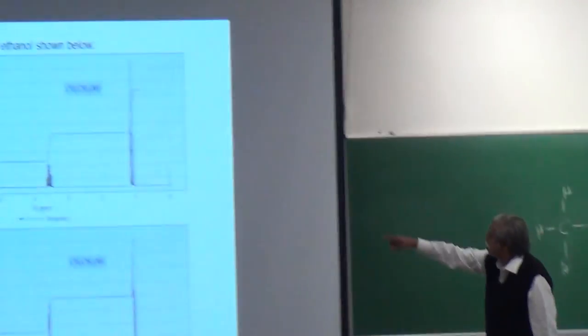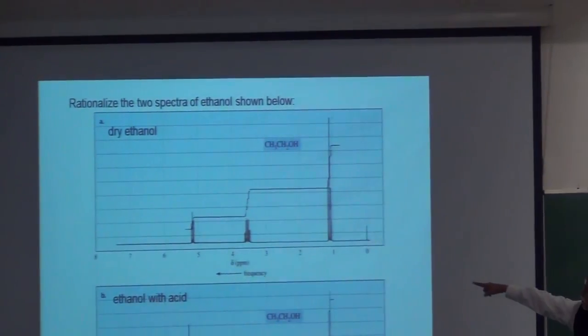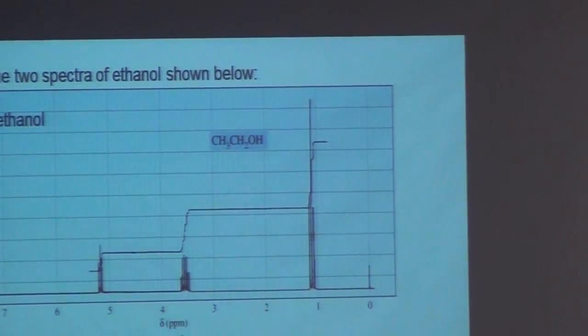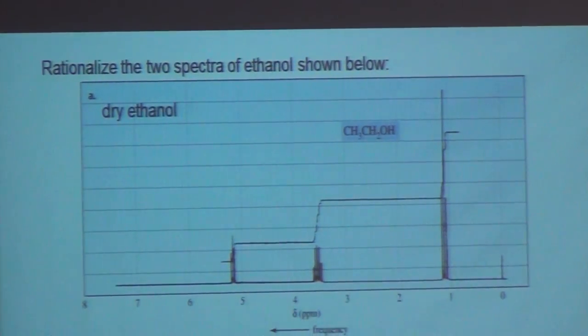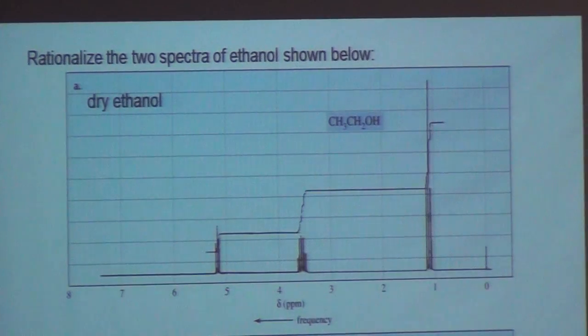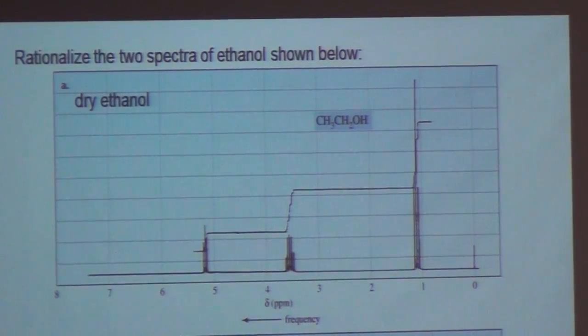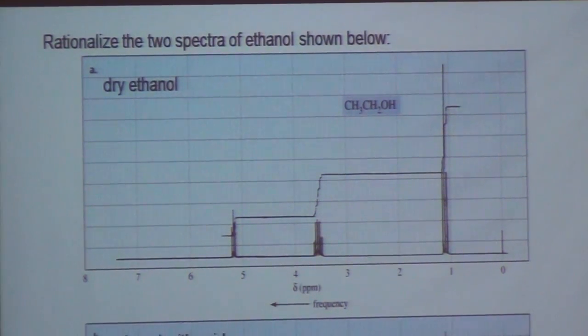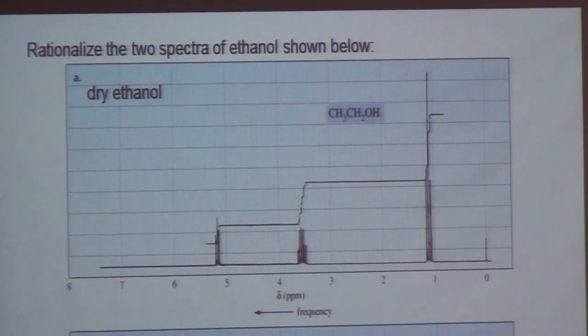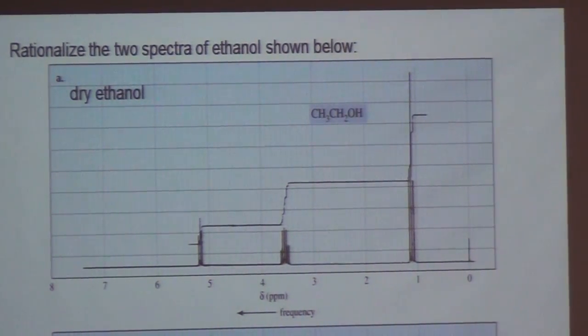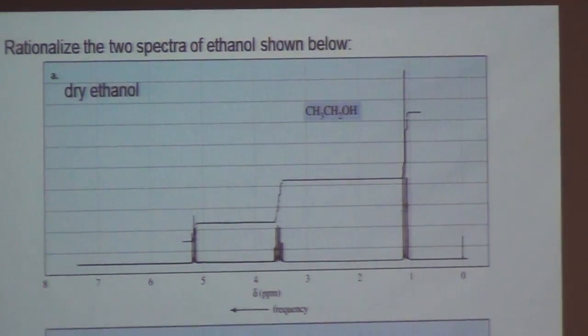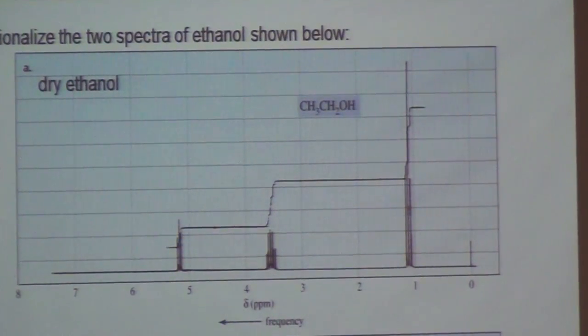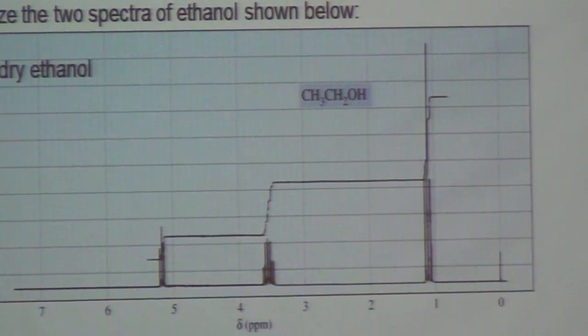So look at the first spectrum. I have a triplet near 5 point something. And 5 point something must be the OH proton because it is heavily deshielded. The 1 point something must be the methyl. And that is clearly split into 3 peaks. No question. But the one at 3 point 6, which should be the CH2, is actually not split into a quartet.